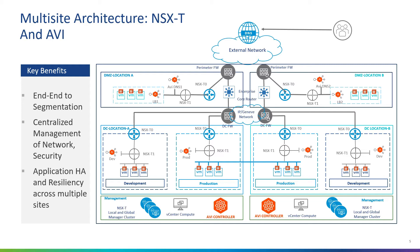In the DMZ, your applications are published, so you need very tight control. For AVI, this is one of the most prominent use cases — it can use its Web Application Firewall (WAF) to protect applications. AVI can also provide GSLB services so applications can be load-balanced or load-shared across multiple sites. Additionally, NSX-T Federation can extend security and network policies across multiple sites using the GENEVE protocol with overlay-based routing, eliminating spanning tree and L2 loops.